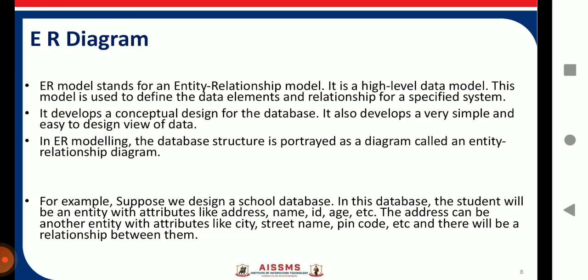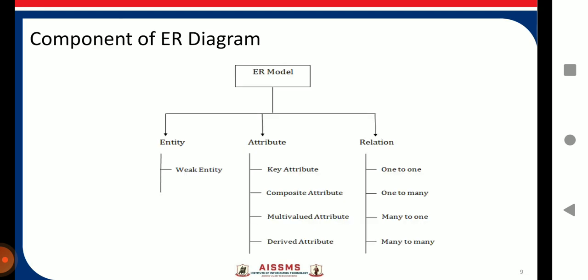Suppose if you want to design a school database, the student will be an entity with attributes like address, name, ID, age, roll number, division. And the address can be another entity with attributes like city, street name, pin code, phone number. There will be a relationship between them. So in this way, you can consider any example and you can draw the ER diagram for the same.